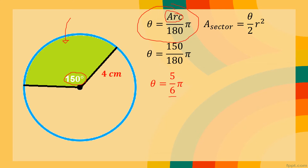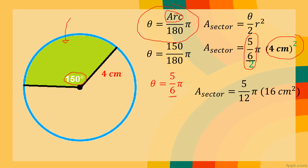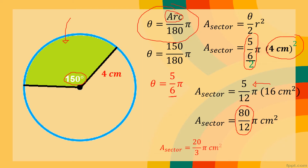Using θ = (5/6)π, we substitute into the area formula. Area of sector = (5/6)π ÷ 2 × (4)². Simplifying: (5/6) ÷ 2 = (5/12)π, and 4² = 16 cm². So we get (5/12)π × 16 = (80/12)π cm². Simplifying 80/12 gives (20/3)π cm². In decimal, the area of the sector is approximately 20.93 cm².